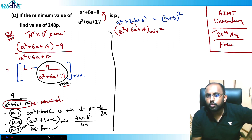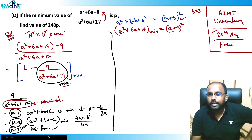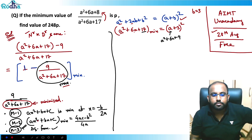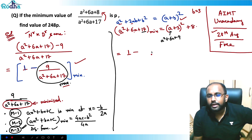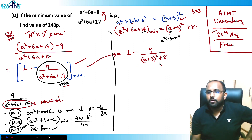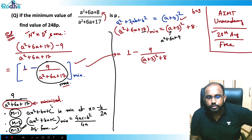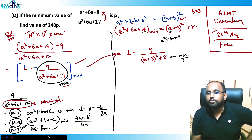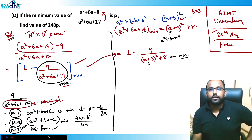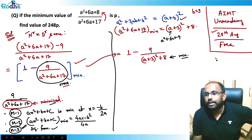Now (A + 3)² expands to A² + 6A + 9. Since the constant in our expression is 17, the remainder is 17 − 9 = 8. So A² + 6A + 17 = (A + 3)² + 8. The whole expression now becomes 1 minus 9/[(A + 3)² + 8]. Since (A + 3)² is a perfect square, it is always greater than or equal to 0, so its minimum value is 0.